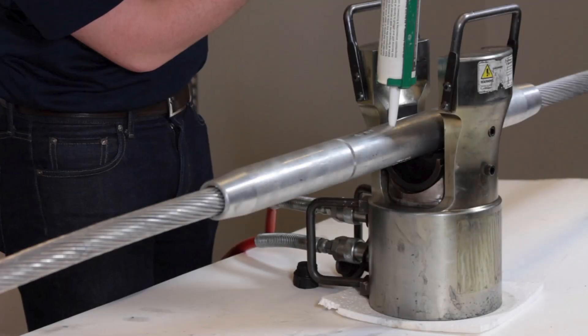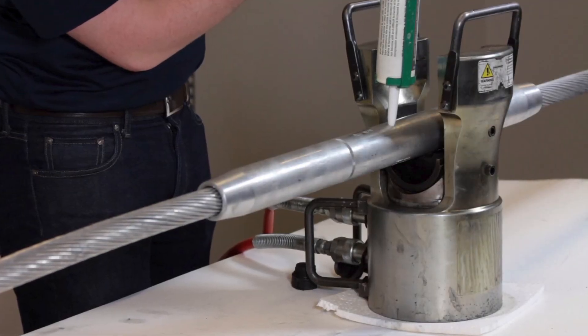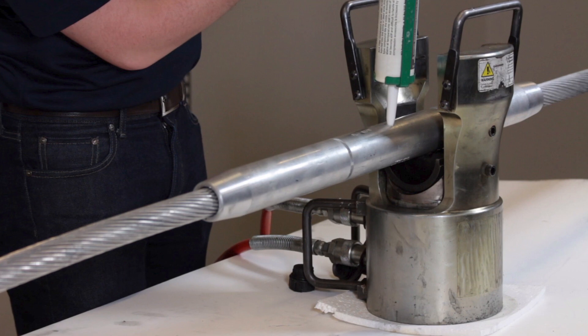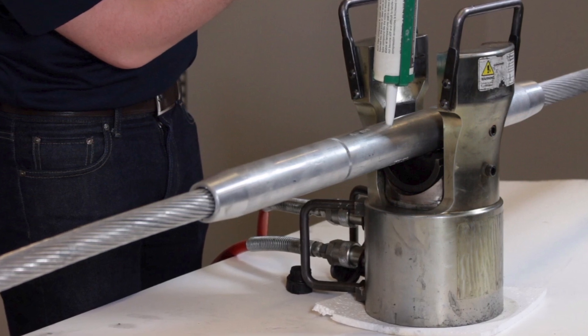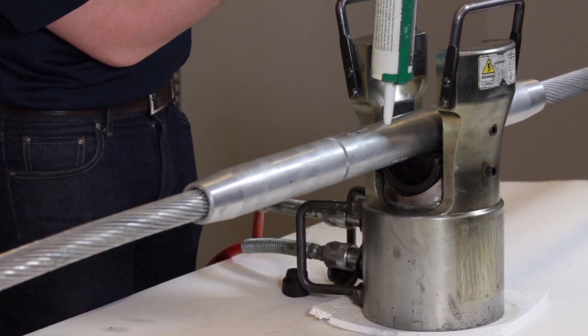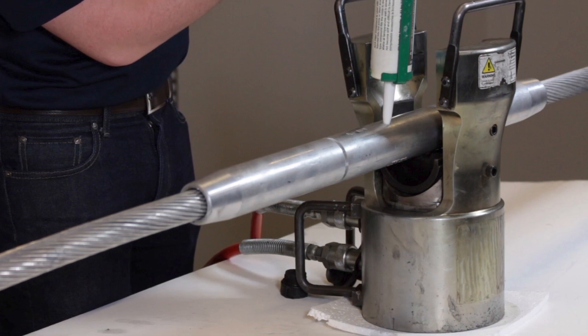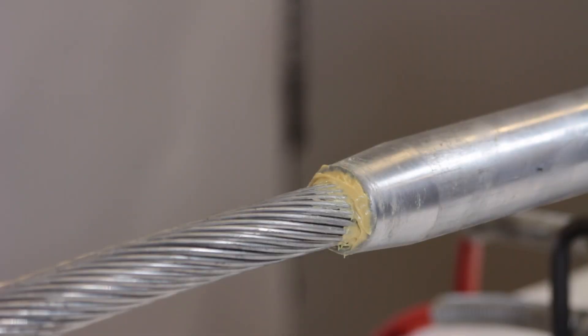Inject appropriate inhibitor compound through the filler hole in the aluminum body. For ACSS conductors, the inhibitor must be rated for temperatures up to 250 degrees Celsius. Cease application when inhibitor seeps out the ends of the hardware. This will continue to ooze out the ends as compressions are applied.